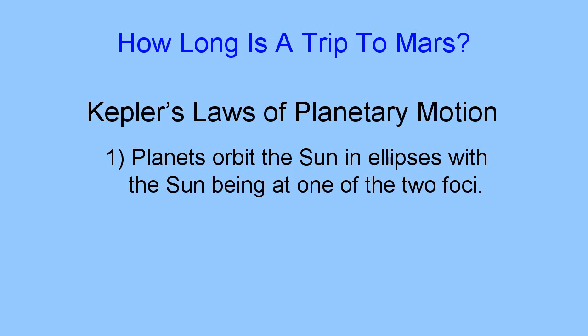Do you remember Kepler's three laws of planetary motion? The first one is that planets orbit the sun in ellipses. In case you were asleep that day, I'll refresh your memory with a mini crash course on ellipses.